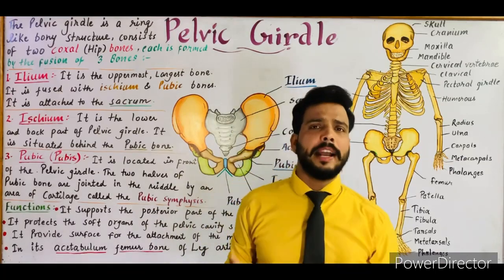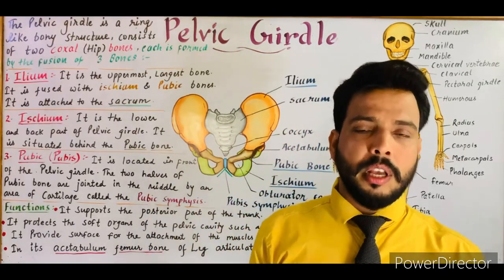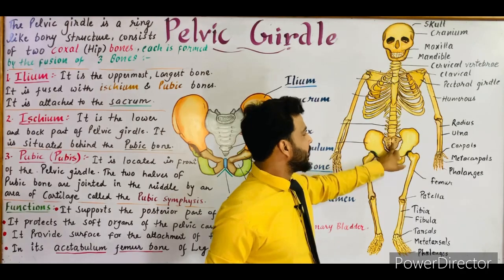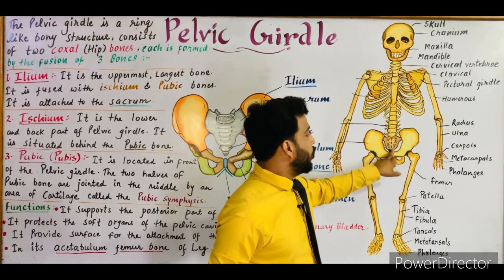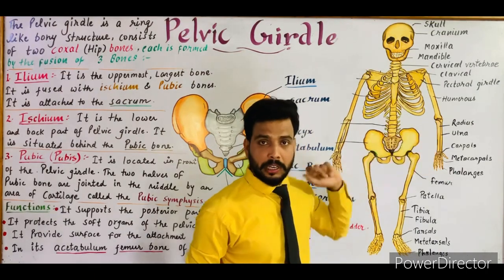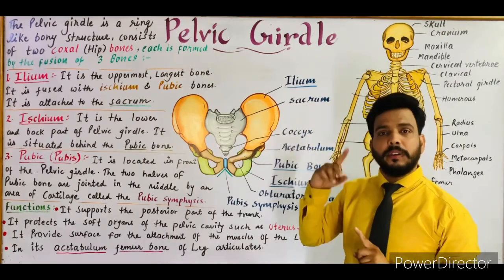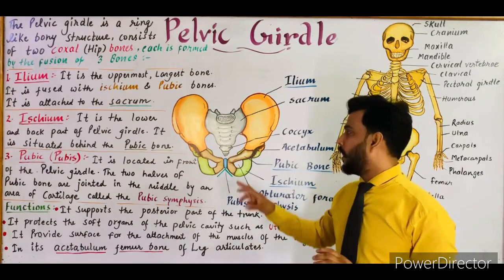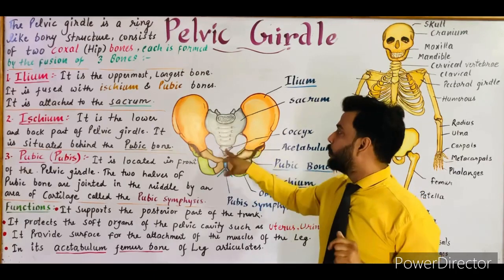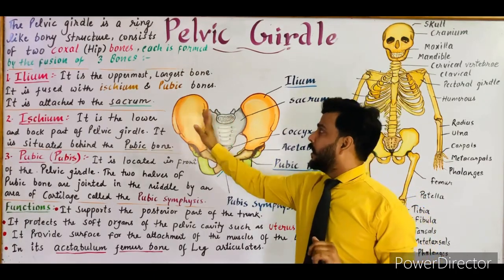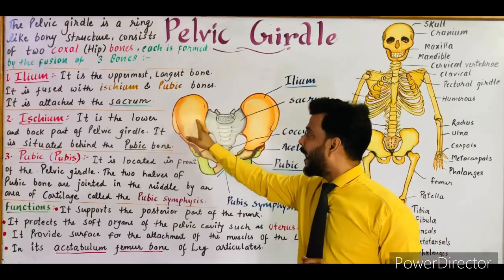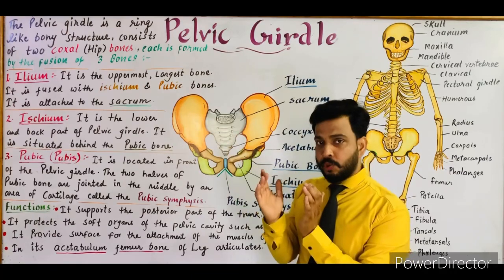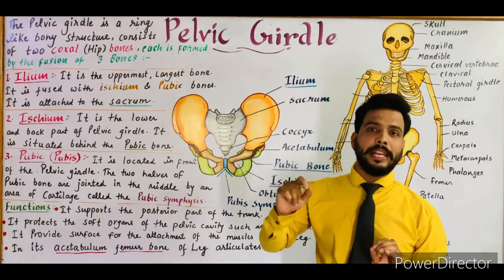The pelvic girdle is attached to the sacrum. As described in my last videos, the lower-most part of our vertebral column is known as the sacrum and coccyx. Both parts of the vertebral column are attached to the ileum bone of the pelvic girdle. The ileum bones are attached to the sacrum with the help of a joint called the sacroiliac joint.